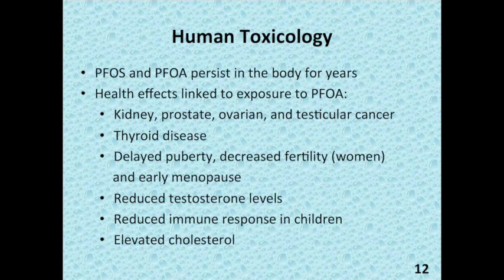On slide 12, the knowledge base on the human toxicology of fluorochemicals is rapidly growing. However, what we know today is largely based on studies focused on PFOS and PFOA. We now know that PFOS and PFOA residues persist in the human body for years, and an increasing number of large-scale studies report links between human exposure to PFOA and kidney cancer, prostate, ovarian, and testicular cancer, as well as thyroid disease. A smaller number of studies indicates links to delayed puberty, decreased fertility and early menopause in women, and reduced testosterone levels in men. In addition, children who received childhood immunizations exhibit reduced immune responses related to their blood concentrations of certain fluorochemicals, and relationships between PFOA and elevated cholesterol have also been identified.